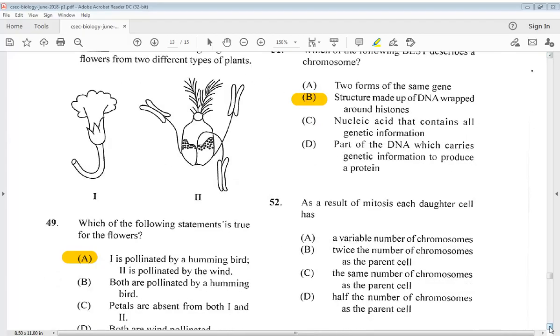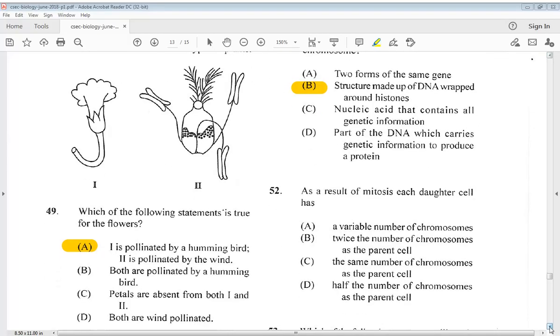Question 52 says, as a result of mitosis, each daughter cell has: A. A variable number of chromosomes. B. Twice the number of chromosomes as the parent cell. C. The same number of chromosomes as the parent cell. D. Half the number of chromosomes as the parent cell. So the answer is C.